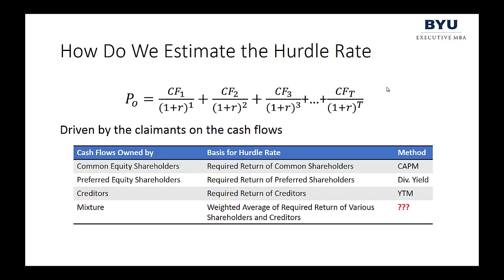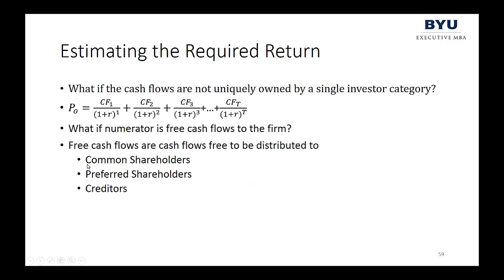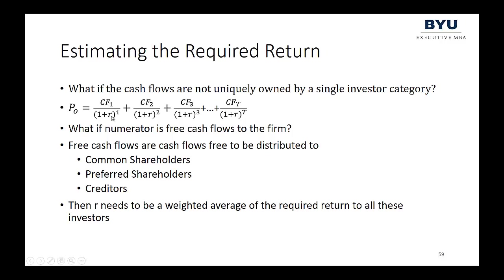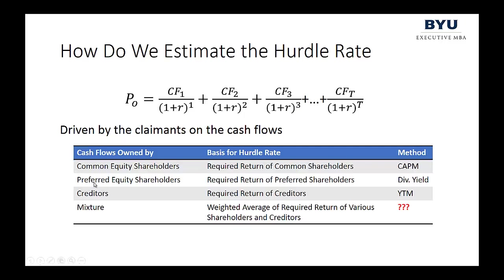We've made tremendous progress. How do we estimate the hurdle rate? It depends on the claimants to the cash flows. If it's common shareholders, we use CAPM. If preferred shareholders, we use the dividend yield. If creditors, we use the weighted average yield to maturity on long-term bonds. But what if the cash flows go to mixed claimants — free cash flows to the firm going to common shareholders, preferred shareholders, and creditors? In that case, the discount rate R needs to be a weighted average of the required returns of all these investors.